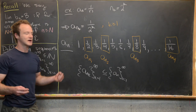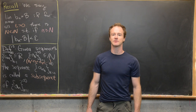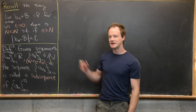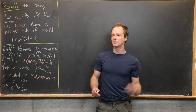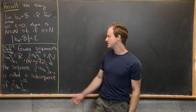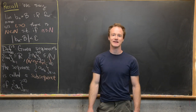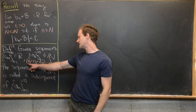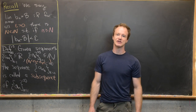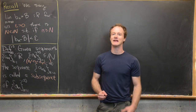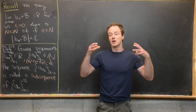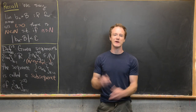Now let's look at a couple of results regarding subsequences. We're going to refine this definition a little bit. The addition I want to make is that the sequence n_k is a strictly increasing sequence — so n_1 < n_2 < n_3 and so on. Without this inequality we can define a subsequence, but we wouldn't get many nice results. With this strictly increasing requirement, we get a lot of nice results.